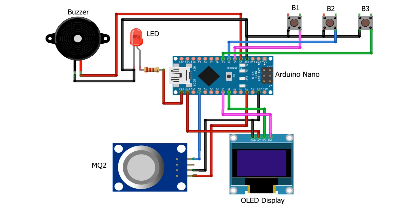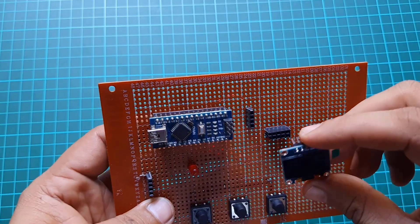The LED anode pin is connected to the D13 pin of the Arduino and its cathode pin to GND. The buzzer positive pin is connected to D2 of the Arduino and its negative pin to GND. Finally, three push buttons are connected to the D3, D4, and D5 pins of the Arduino, with all other pins connected to ground.